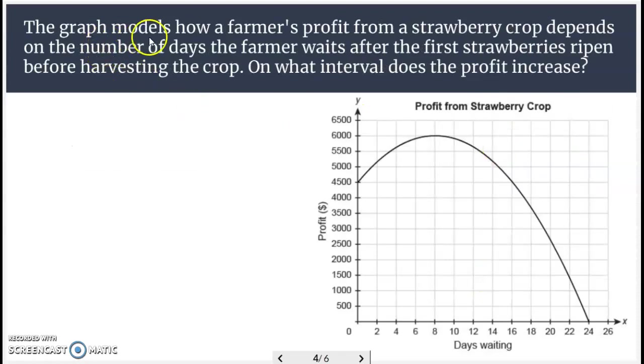Let's look at another one here. This graph models how a farmer's profit from a strawberry crop depends on the number of days the farmer waits after the first strawberry is ripened before harvesting the crop. On what interval does the profit increase? So this is a graph of profit. Here we see it increasing here, decreasing here.